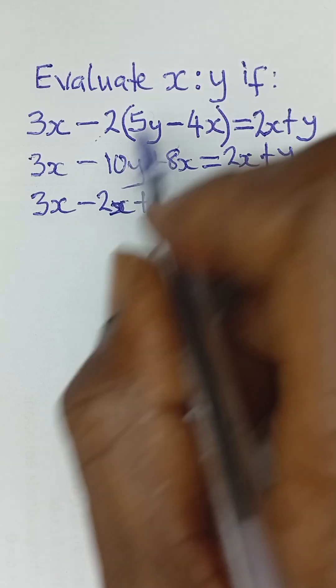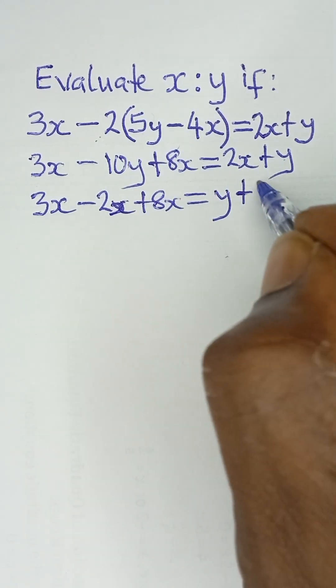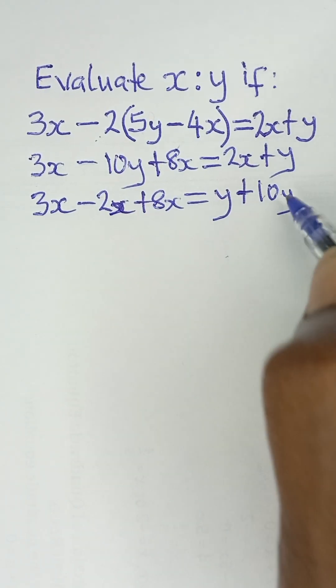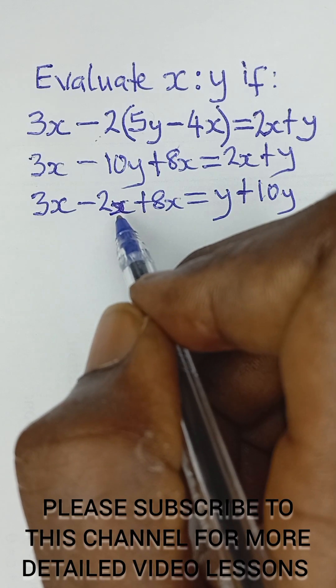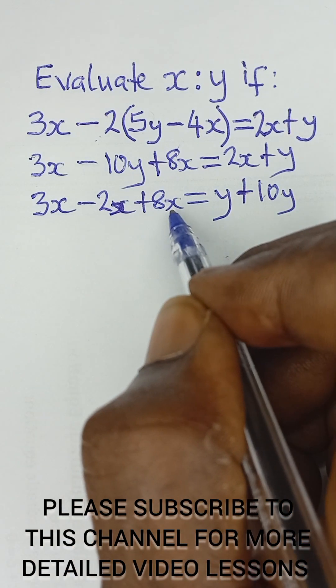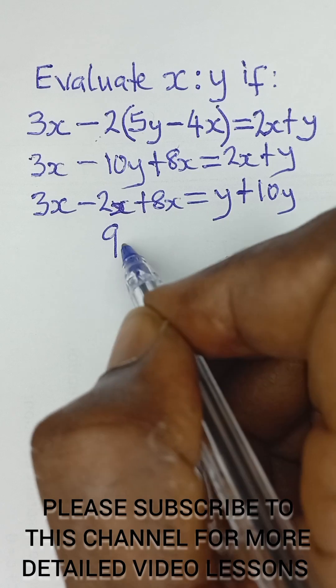When this negative 10y comes to this side it becomes positive 10y, so 3x minus 2x is x plus 8x will give us 9x.